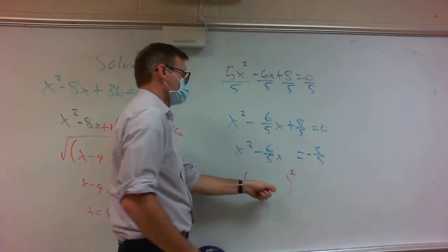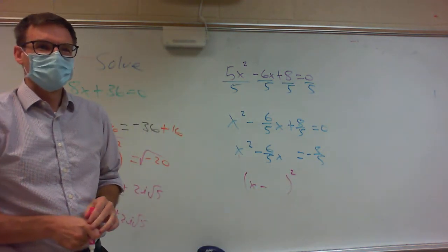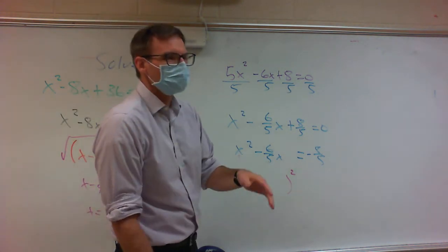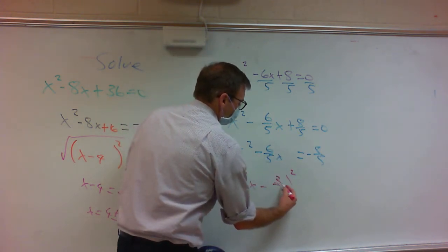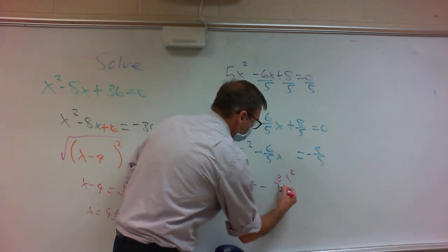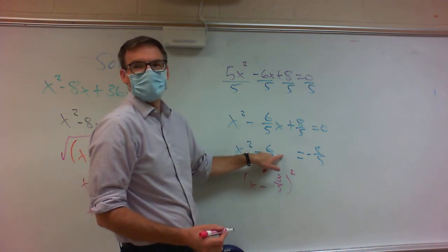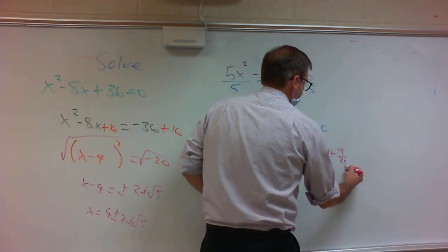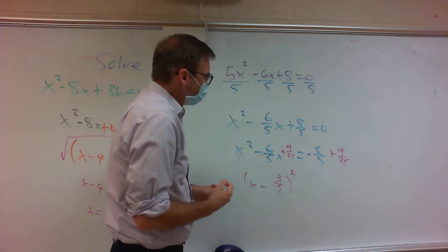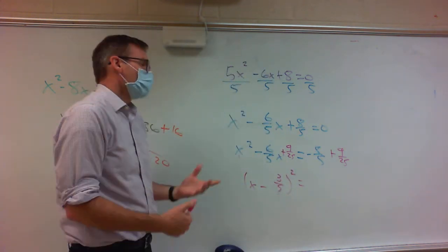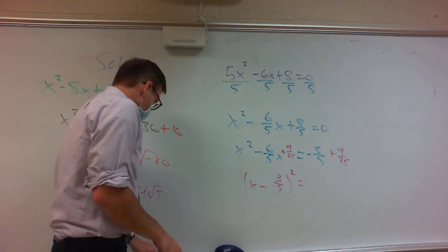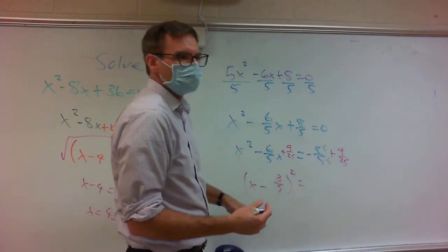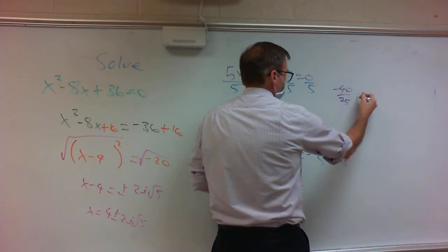To complete the square: x minus what? Half of 6 fifths: you take half by multiplying the denominator by 2, giving 3 over 5. So we get x minus 3 over 5, and we square it: 3 over 5 squared is 9 over 25. Add 9 over 25 to this side, and you've got to add 9 over 25 to the other side. Now you've got to get a common denominator.